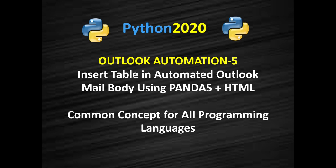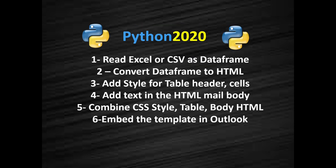Hello and welcome back to another video on Outlook email automation. In this video we will see how to add a table in the email body using pandas and HTML. First we will read the Excel or CSV into a pandas DataFrame and then we will convert that DataFrame into an HTML table.